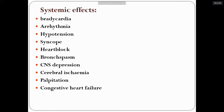Systemic side effects of beta blockers include bradycardia, arrhythmia, hypotension, syncope, heart block, bronchospasm, CNS depression, cerebral ischemia, palpitation, and congestive heart failure. Though this is an ophthalmology exam, examiners — especially senior ones or those from IOM — may ask about systemic side effects, so these should be noted.